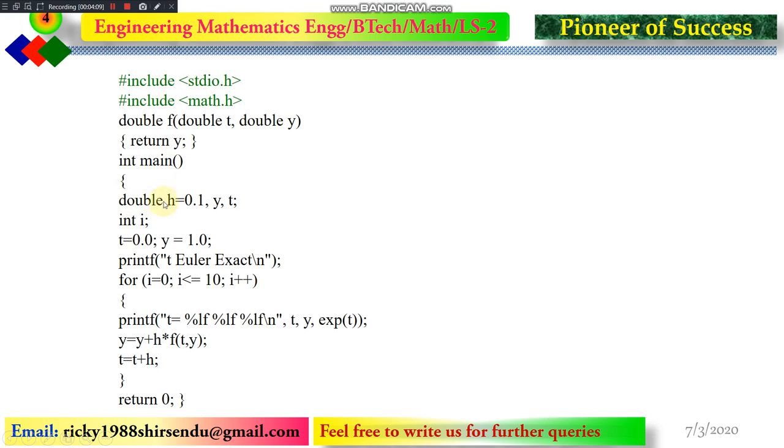And in the main code, you can see we have taken h equal to 0.1. So for the time being, we have taken the time step as 0.1. We can go even lesser than this 0.1 value. We can go to 0.01, 0.001, whichever you want to put the value of h, you can put. Then y and t parameters are taken for the sake of calculations.